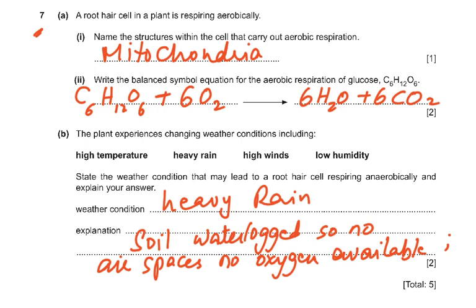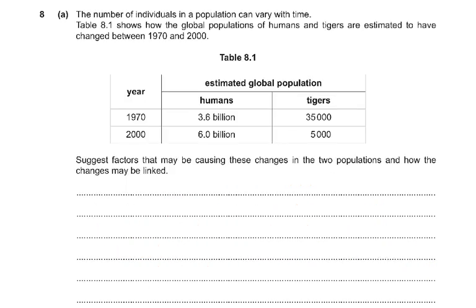That question involves filling in symbols and values for five marks — straightforward once you know the content. Now coming to the last question, question 8: the number of individuals in a population can vary with time. Table 8.1 shows the global population of humans and tigers estimated to have changed between 1970 and 2000. In 1970, humans were 3.6 billion and tigers were 35,000. By 2000, there were 6 billion humans but only 5,000 tigers.